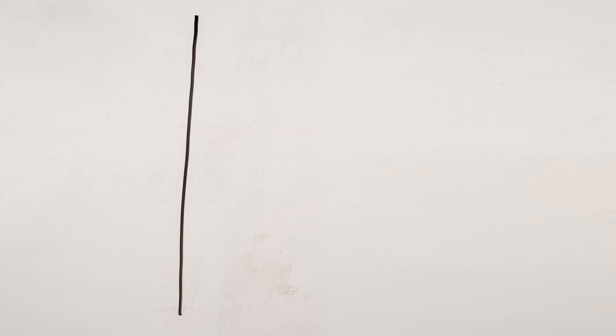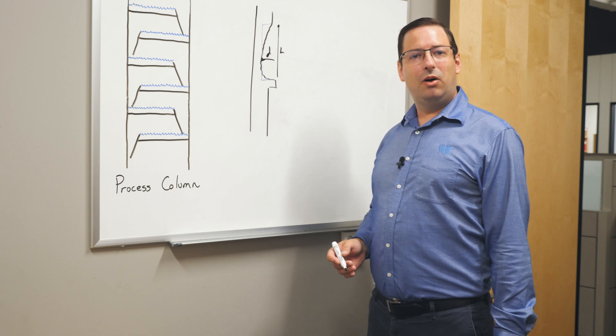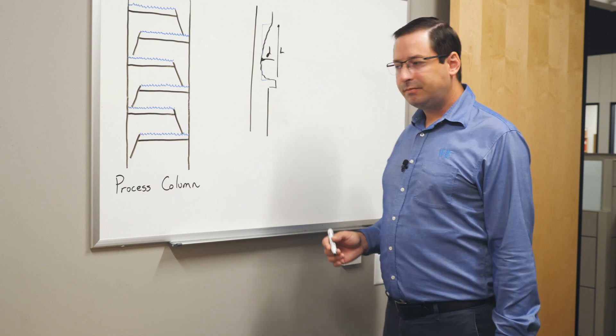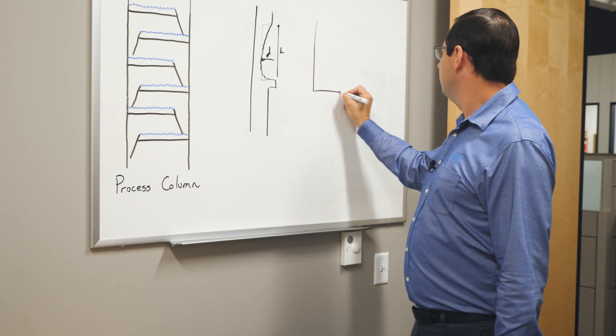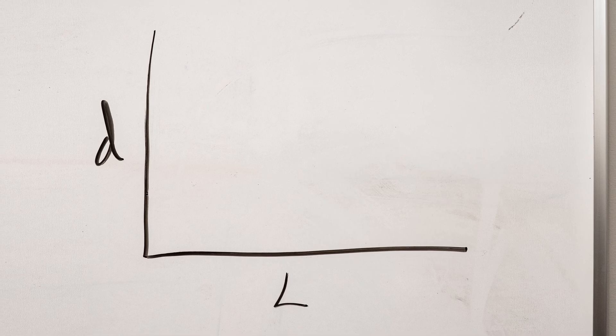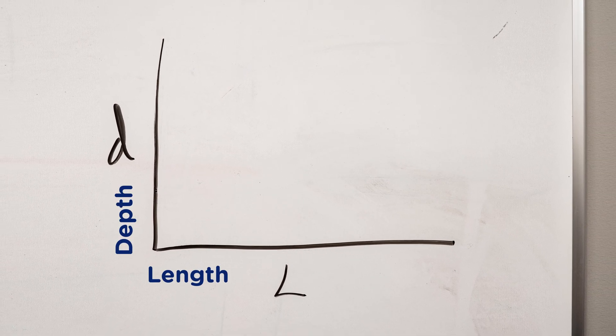In the area around a tray, the shell can sometimes be corroded right at the tray ring, and we can assess it using the methods of part five local thinning. In this case, we're going to draw a simplified example where we're plotting the depth of corrosion versus the length of the corrosion area.